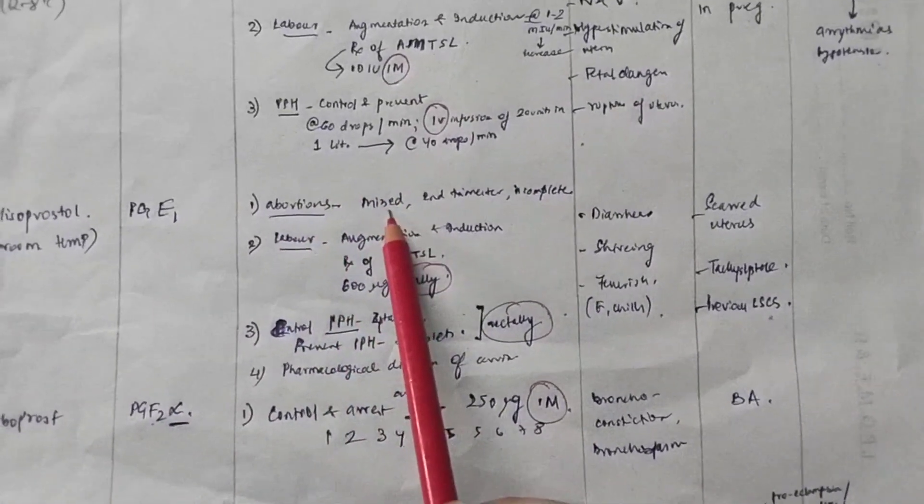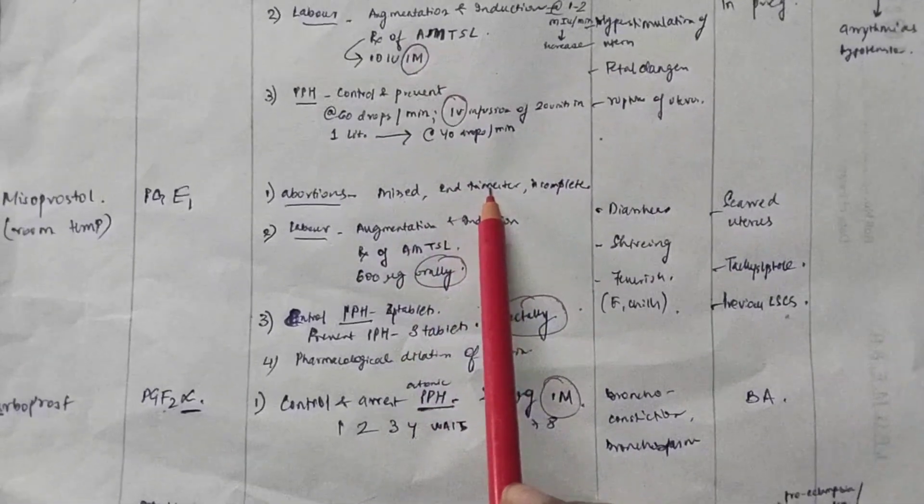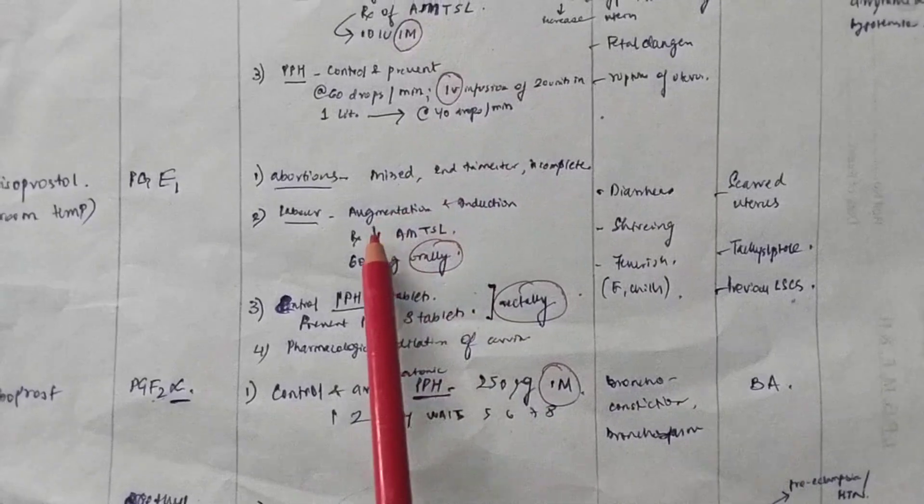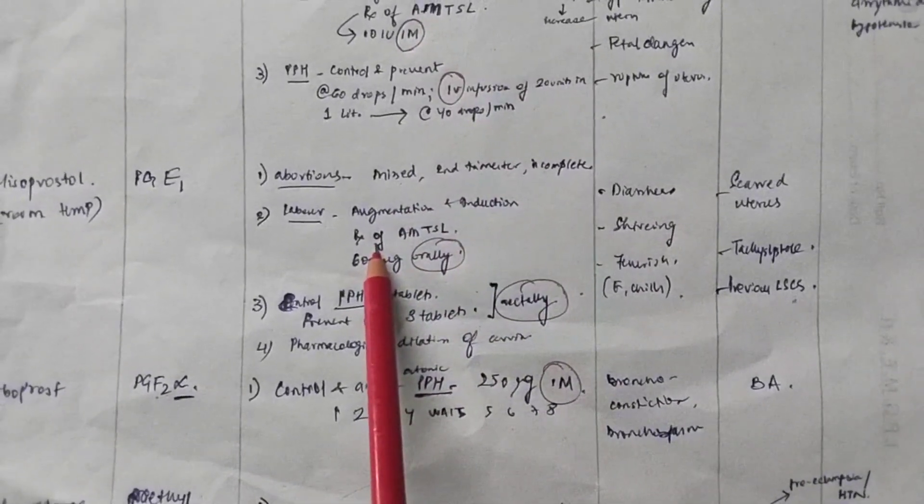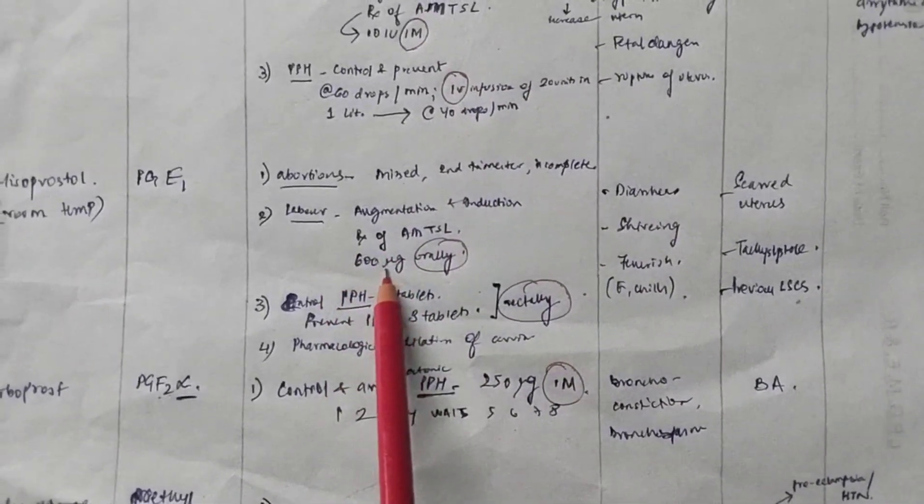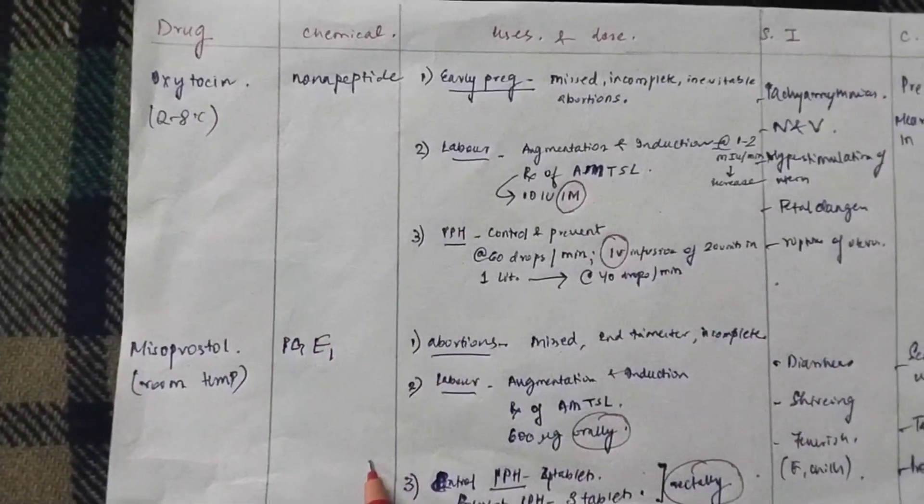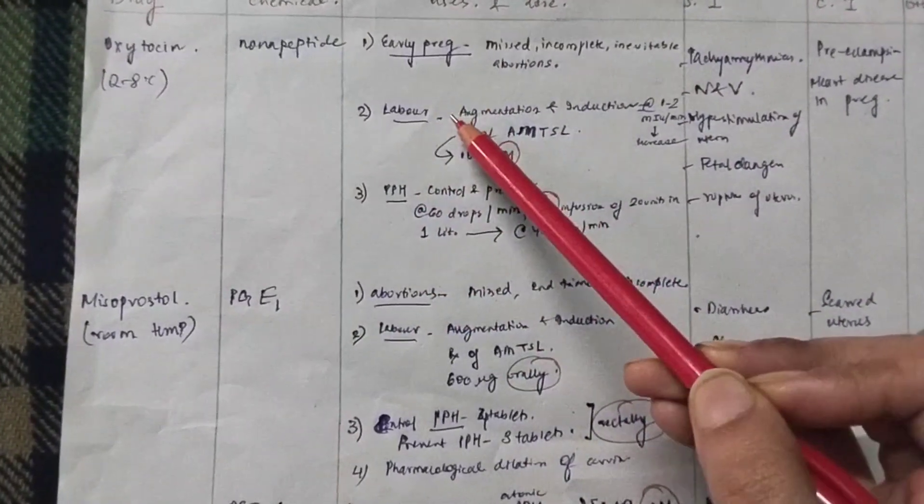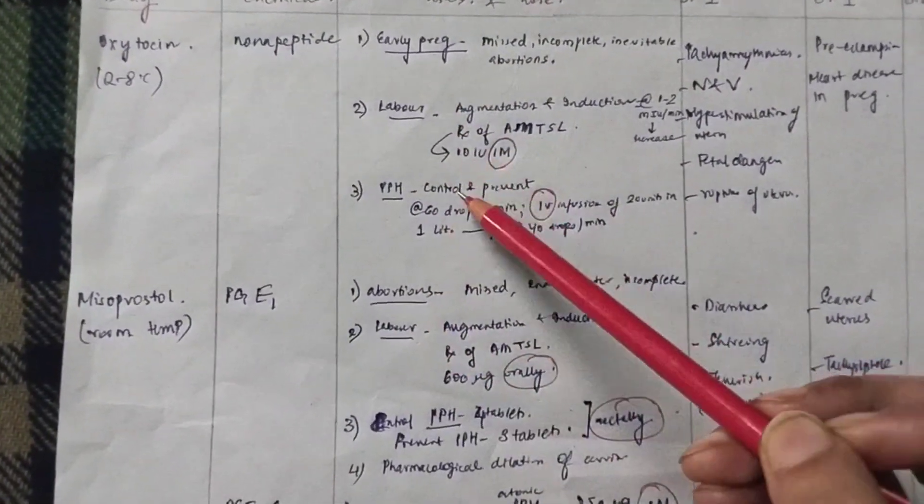In abortions, they are used in missed abortions, second trimester abortions. In labor, they are again useful in augmentation and induction of labor. They are also used in management of third stage of labor. How much is it? 600 micrograms orally. So, misoprostol and oxytocin are all the same. And you can also see the uses are also similar. Abortions, augmentation and induction labor, PPH.